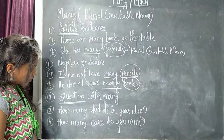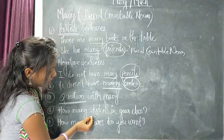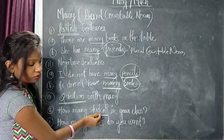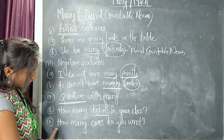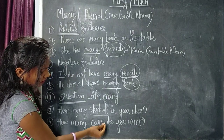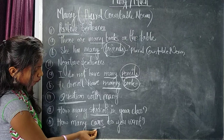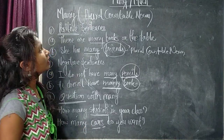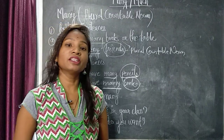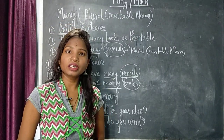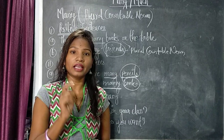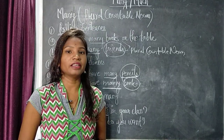Now question type sentences. 'How many students in your class?' Students has S — it is plural countable noun, so we use many. Second example: 'How many cars do you want?' Cars has S added, making it plural. So with plural countable nouns, we use many. In this way, many is used in positive, negative, and question sentences — always with plural countable nouns where S or ES is written.